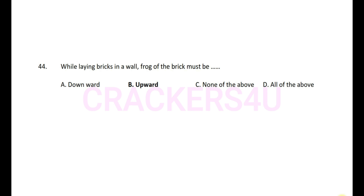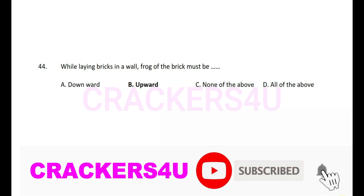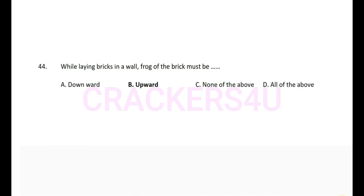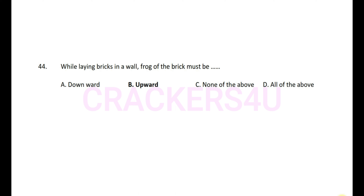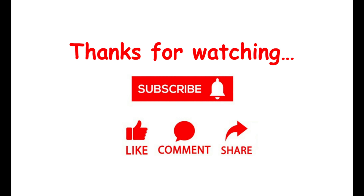Question 43: Minimum wall thickness of brick masonry wall is — answer: 10 centimeters. Question 44: While laying bricks in a wall, the frog of the brick must be — answer: upward. Dear friends, our today's topic is over. We will see again with a new video. Please like, share, comment and subscribe. Thanks for watching.